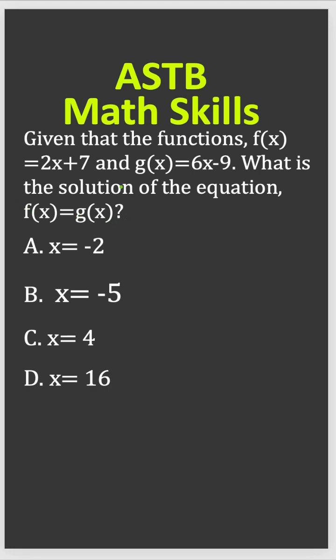That's straightforward. f(x) = g(x). So plug the value in here. Let me write that down: 2x + 7 = 6x - 9, right.